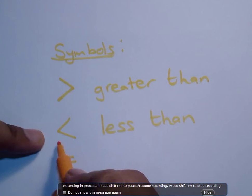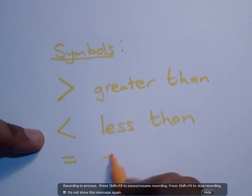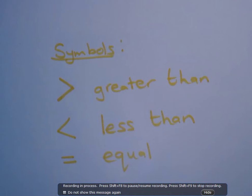It looks like an L so the less than sign. This is the equal to sign. And these are the three symbols we will be using in the exercise.